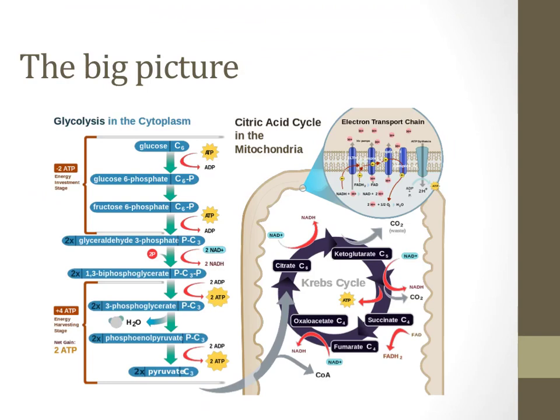Formation of acetyl coenzyme A is the second step, where two pyruvate molecules are further broken down into two acetyl coenzyme A, and two more NADH molecules are produced.